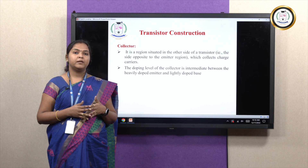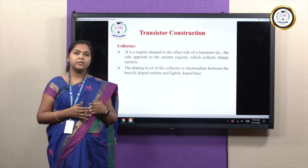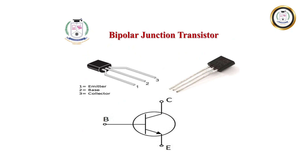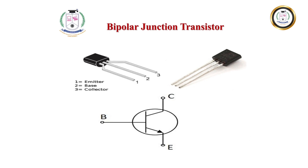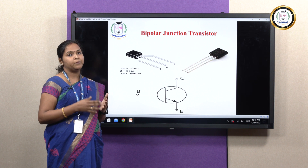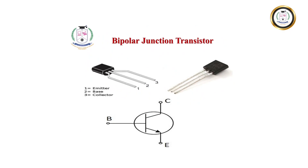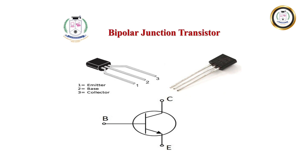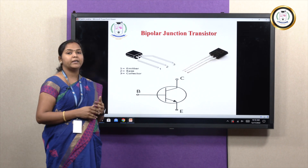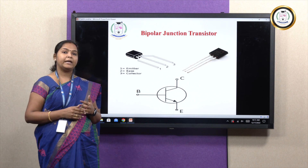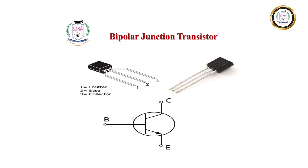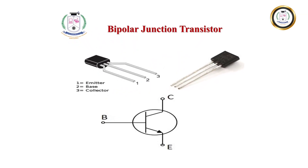These are the three different regions, which we name as the terminals of a bipolar junction transistor. This is the pictorial representation showing the bipolar junction transistor, wherein we have three terminals: emitter, base, and collector. This is the symbolic representation wherein you have the emitter, base, as well as collector. In addition, you can find an arrowhead. This arrowhead indicates the flow of conventional current, which always flows from positive terminal to negative terminal.